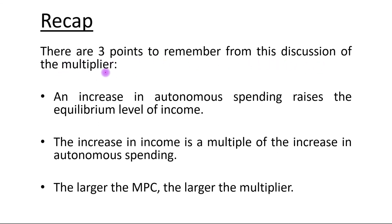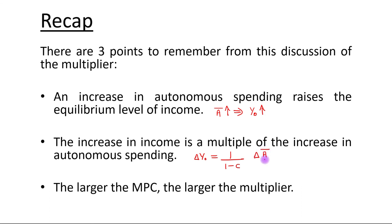Recap — there are three points to remember. First, an increase in autonomous spending raises the equilibrium level of income. Second, the increase in income is a multiple of the increase in autonomous spending. Third, the larger the MPC, the larger the multiplier, where the multiplier equals 1 upon (1 minus MPC). Thank you.